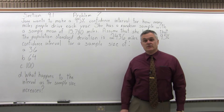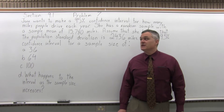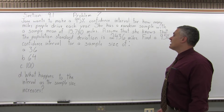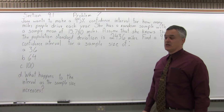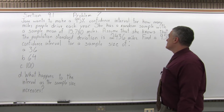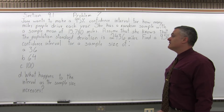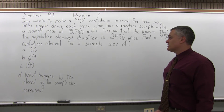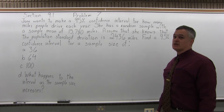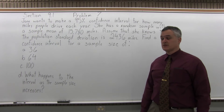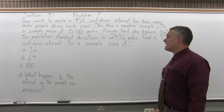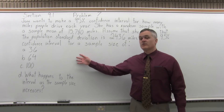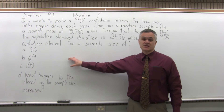This is Section 9.1, Problem 7. Jane wants to make a 95% confidence interval for how many miles people drive each year. She has a random sample with a sample mean of 15,780 miles. Assume that she knows that the population standard deviation is 2,436 miles. Find a 95% confidence interval for a sample size — and then we have a few different sample sizes. The sample size is going to get bigger and bigger.